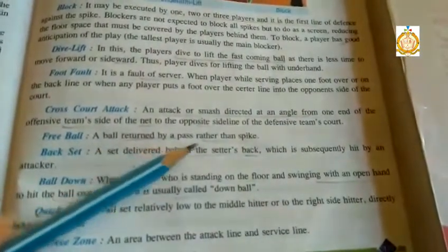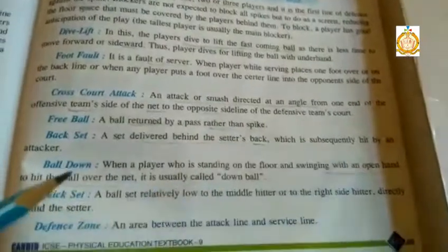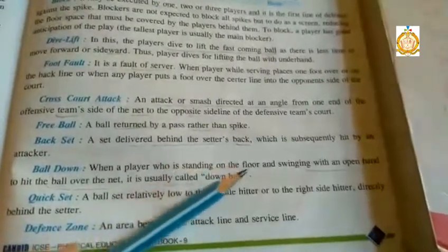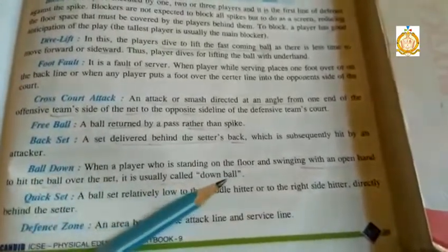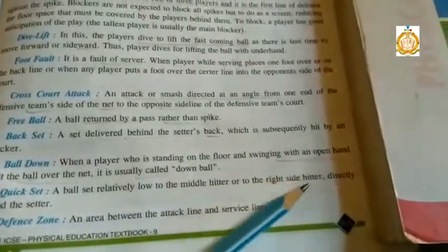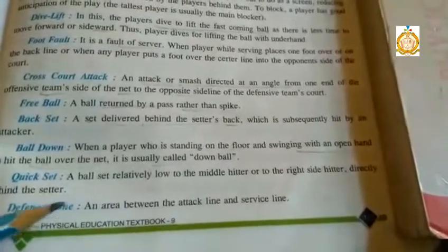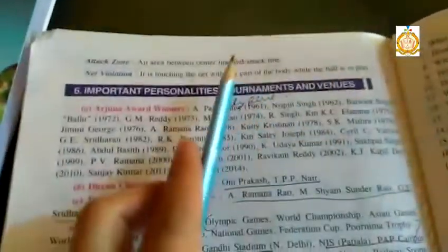A free ball is a ball returned by a pass rather than a spike. A back set is delivered behind the setter's back and subsequently hit by an attacker. Next is a down ball — when a player standing on the floor swings with an open hand to hit the ball over the net, that is called a down ball. A quick set is a ball set relatively low to the middle hitter or to the right-side hitter directly behind the setter. The defense zone is the area between the attack line and service line, and the left attack zone is the area between the center line and attack line. Finally, net violation is touching the net with any part of the body while the ball is in play.